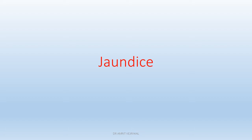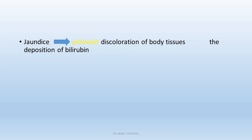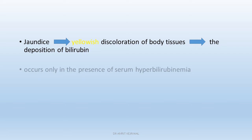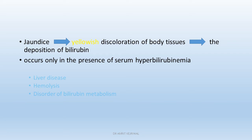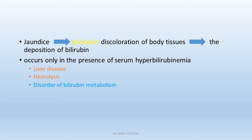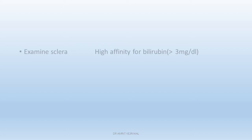Today we will learn about jaundice — the clinical features and approach. Jaundice is the yellowish discoloration of the body tissues. The deposition of bilirubin occurs only in the presence of serum hyperbilirubinemia. Commonly, hyperbilirubinemia is seen with liver disease, hemolysis, and disorders of bilirubin metabolism.